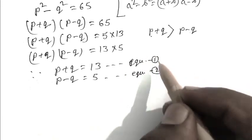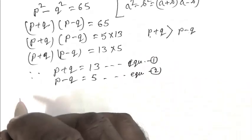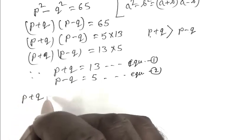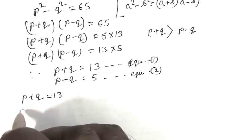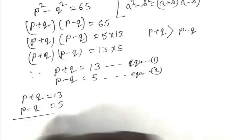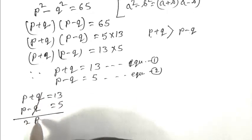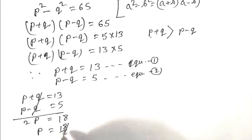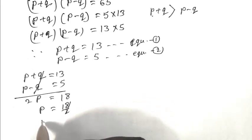By adding equations 1 and 2, we get P plus Q equals 13, P minus Q equals 5. 2P equals 18, or P equals 18 upon 2, that is P equals 9.